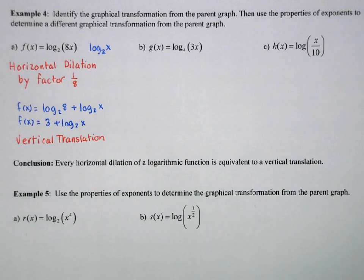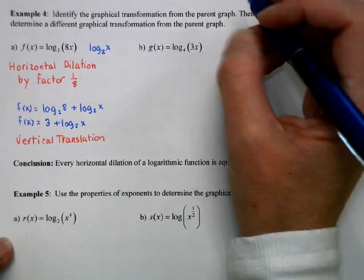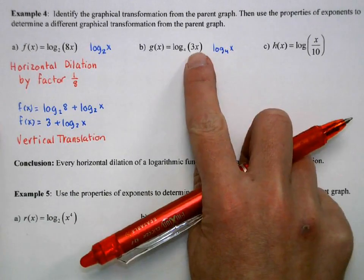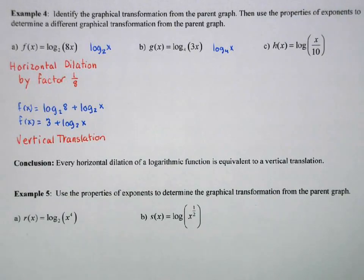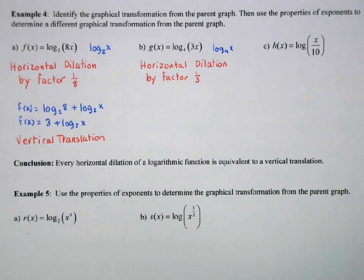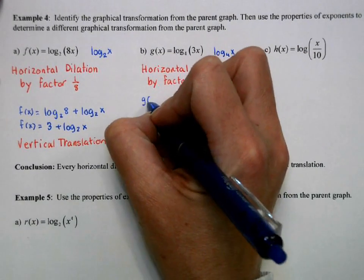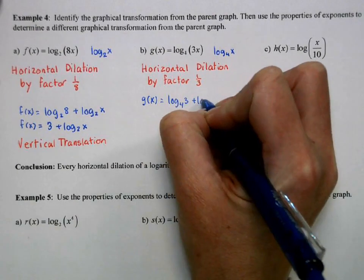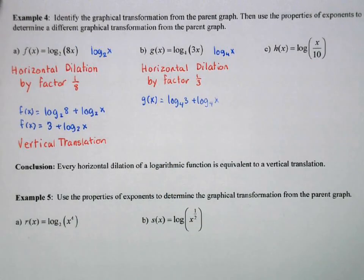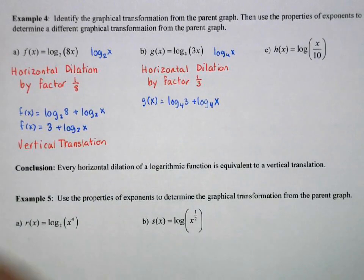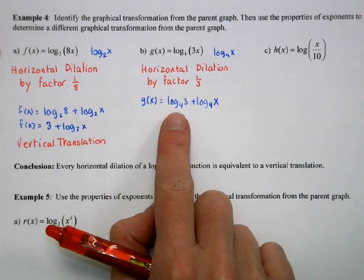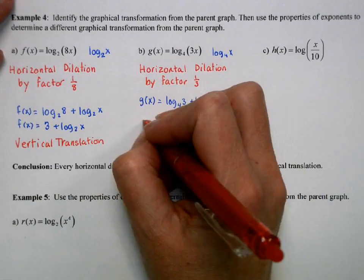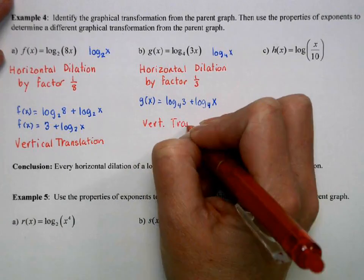Next one. My parent would be log base 4 here. And then we're going to do the same thing. If this is a 3 we're going to have a horizontal dilation of 1 third. Then I can rewrite this using our properties of logs. Okay. So this one doesn't simplify down as pretty as this one does but log base 4 of 3 is just some power. So this is also going to be a vertical translation.